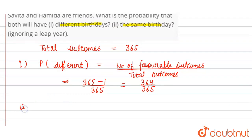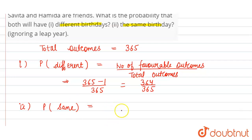Now, the probability that they have their birthdays on the same day: the number of favorable outcomes divided by total outcomes. The number of favorable outcomes is 1, and total outcomes is 365 — because there is only one day on which they share the same birthday. So the answer is 1 divided by 365.